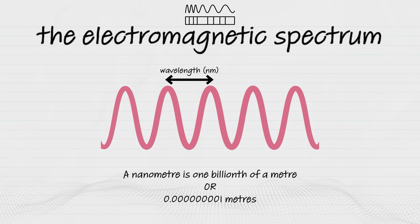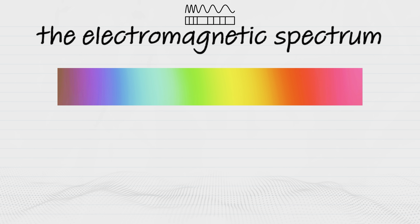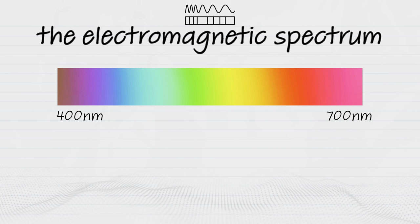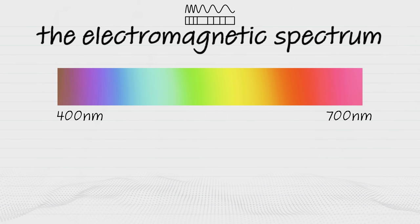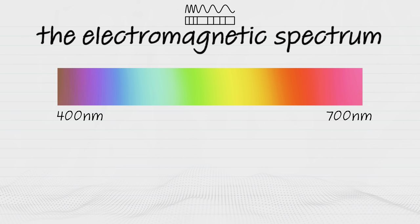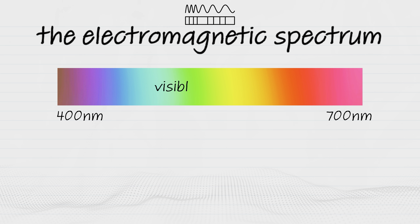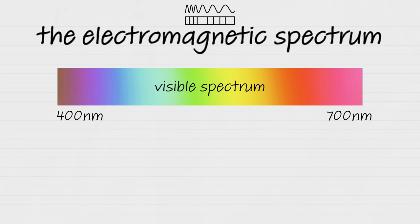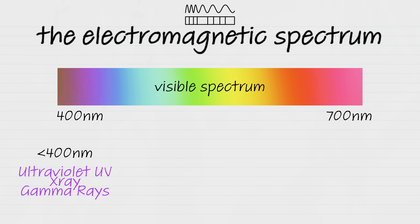Shorter wavelengths, which sit on the violet side of the spectrum, have more energy and measure around 400 nanometres, while longer wavelengths like red measure around 700 nanometres. All the wavelengths between these two values is more commonly known as the visible spectrum. Beyond the visible spectrum, we have ultraviolet light, X and gamma rays with even shorter wavelengths than 400, and beyond the other end we have infrared light with longer wavelengths and lower energy.